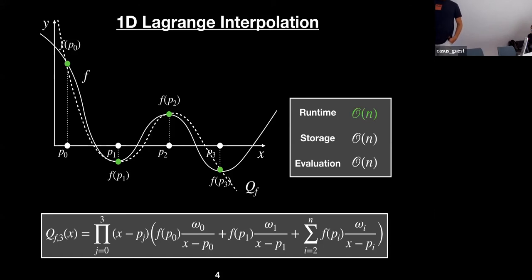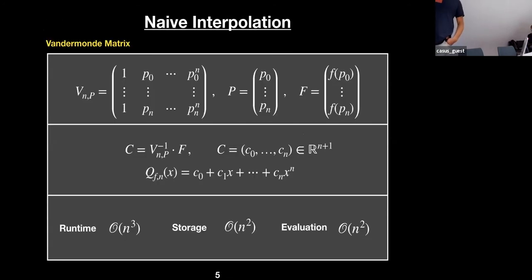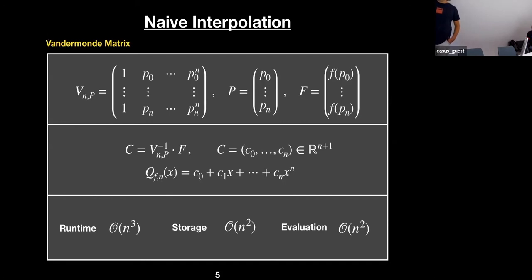Now we have a way of computing polynomials, but many functions are not polynomials. Here's more on the algorithmic part: you can do this naively by writing down the Vandermonde matrix — you have the points, you write their exponents, the values of function f, and solve the system of linear equations. Doing this naively requires cubic time, quadratic storage for the Vandermonde matrix, and quadratic evaluation.